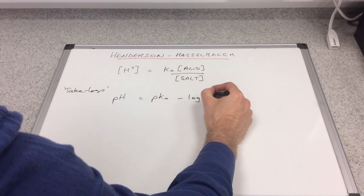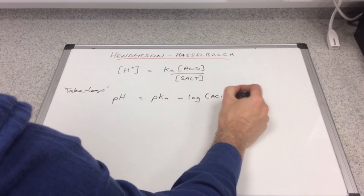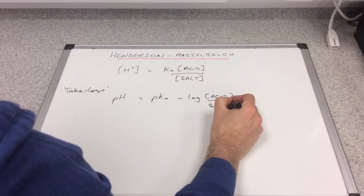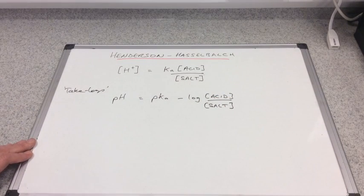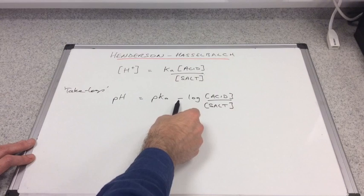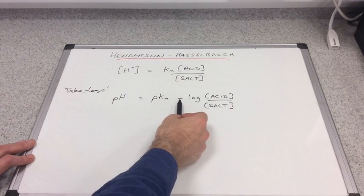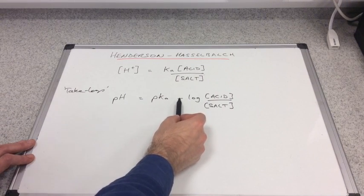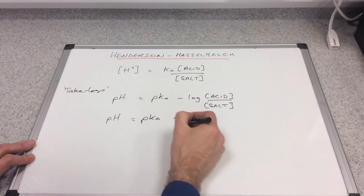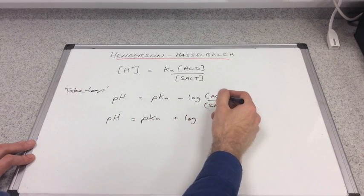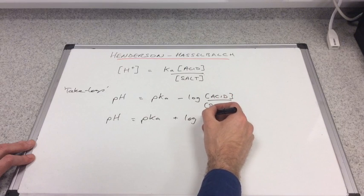The rest of the equation we say minus log acid concentration over salt concentration. The Henderson-Hasselbalch equation slightly modifies this and it turns that minus sign into a plus sign. It stays the same plus log, and instead of acid over salt it becomes salt over acid.